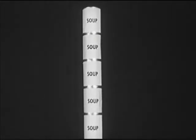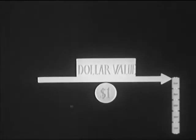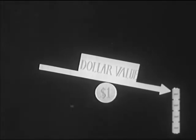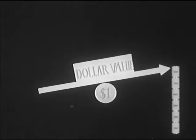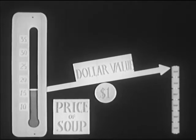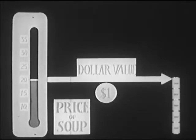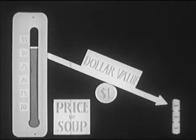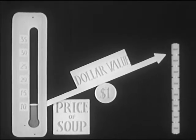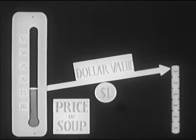Let's say that one dollar will buy five cans of soup — we can think of the value of a dollar as five cans of soup. Another day, if a dollar will buy only four cans, its value has gone down. When it will buy six cans, the value of the dollar has gone up. Thus, the price of soup determines the value of a dollar in respect to soup. As the price goes up, what the dollar will buy goes down; and as the price goes down, what the dollar will buy goes up. So we say the value of the dollar is inversely related to prices.